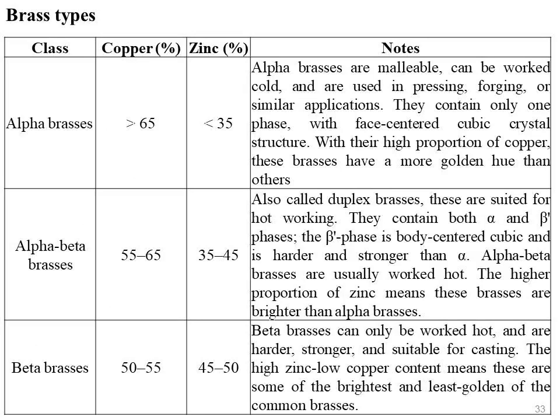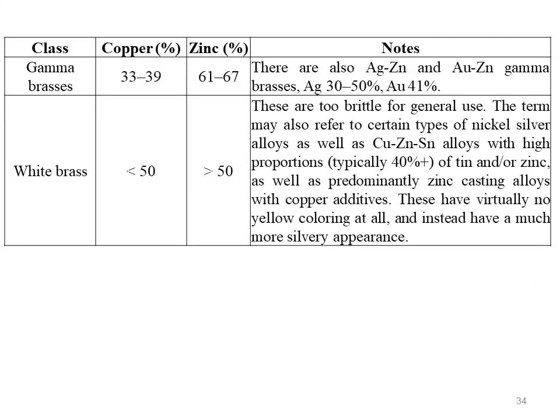These are the different types of brass. First, alpha brasses: copper greater than 65%, zinc less than 35%. Alpha-beta brasses: 55 to 65% copper and 35 to 45% zinc. Beta brasses: 50 to 55% copper and 45 to 50% zinc. Gamma brasses: 33 to 39% copper and 61 to 67% zinc. White brass: less than 50% copper and greater than 50% zinc.